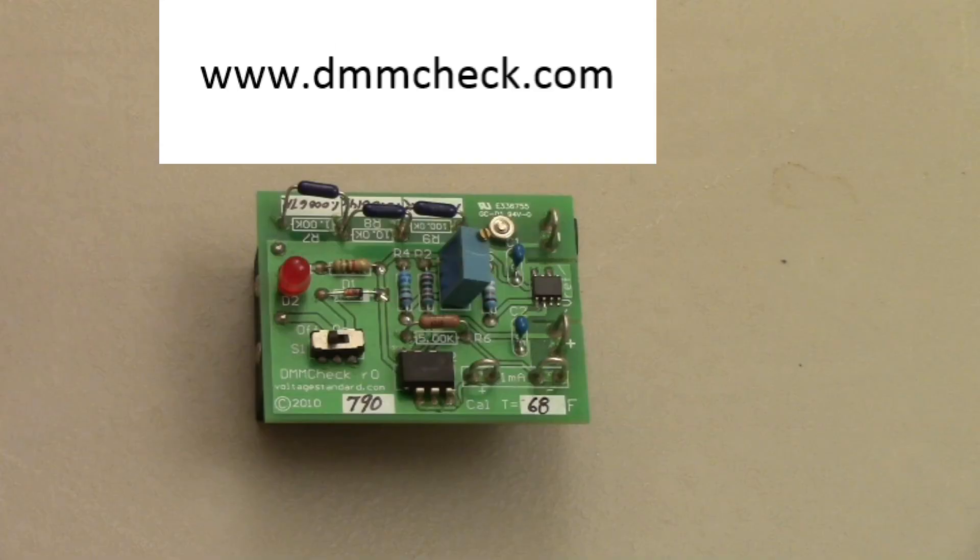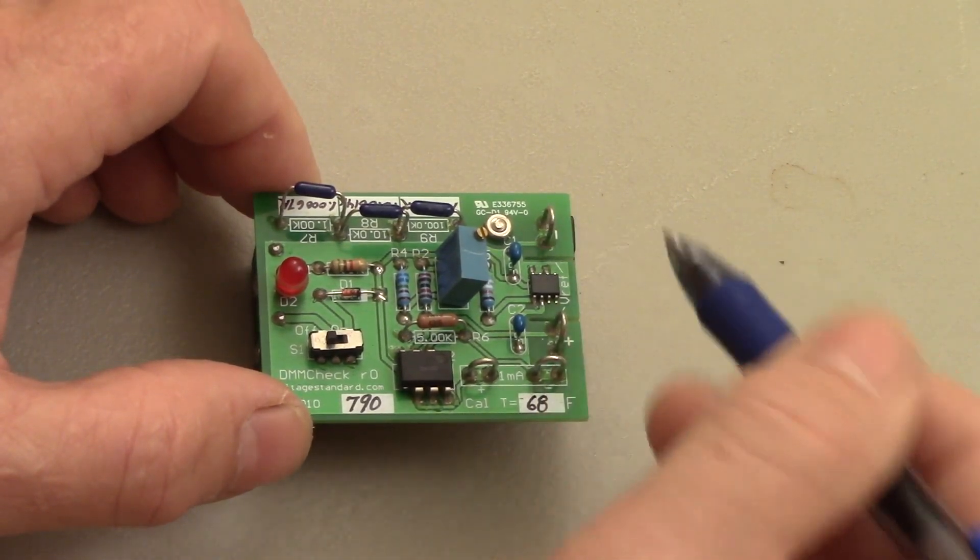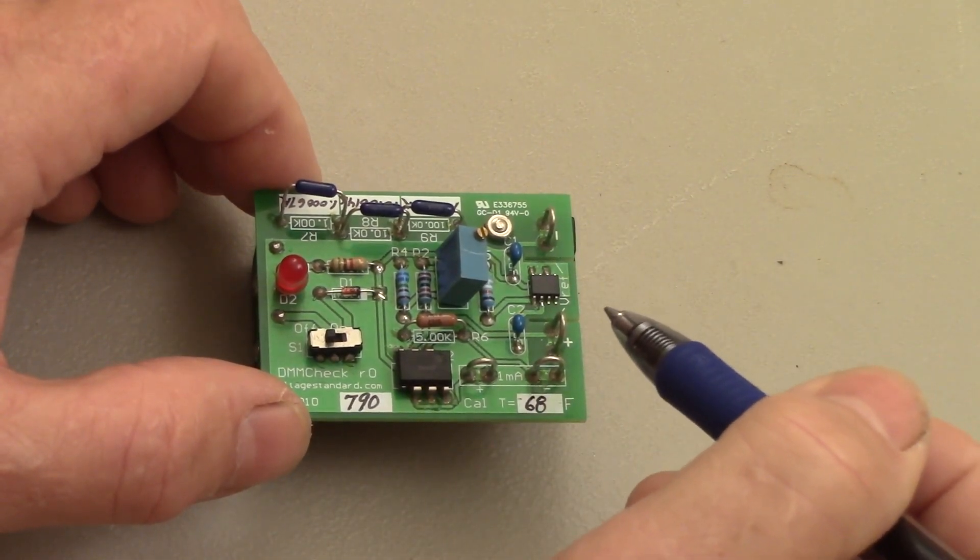This is a $38 poor man's Cal Lab. It's called a DMM check, and it's just a little board powered by a 9-volt battery. The device outputs 5 volts on these two pins, which is accurate to 0.01%.